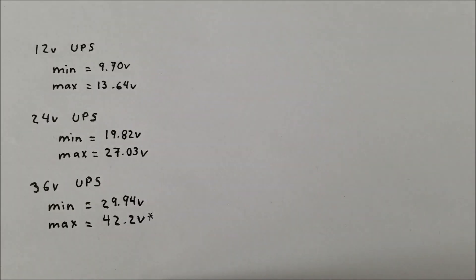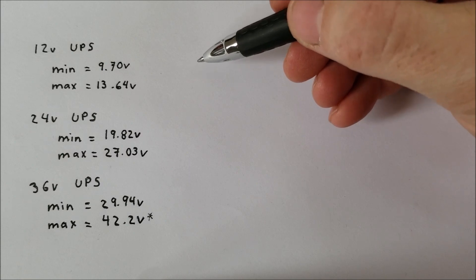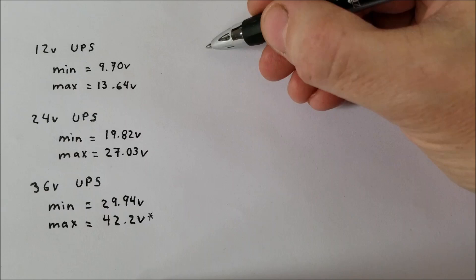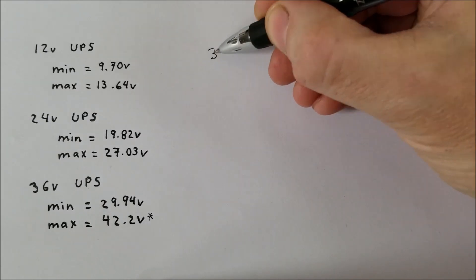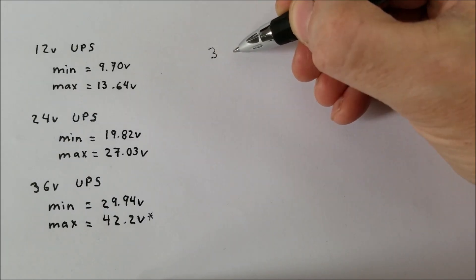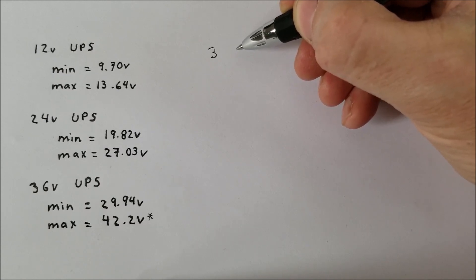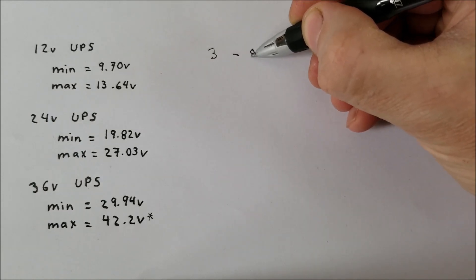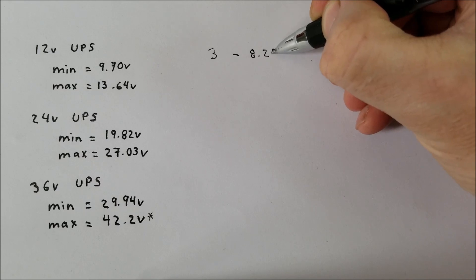So for these calculations, we'll stay with the typical lithium-ion battery voltages of a maximum 4.2V and minimum 2.75V. So if we begin with the 12V UPS and we start with using three cells in series, if we multiply that by the minimum voltage of 2.75V, we obtain a minimum voltage of 8.25V.